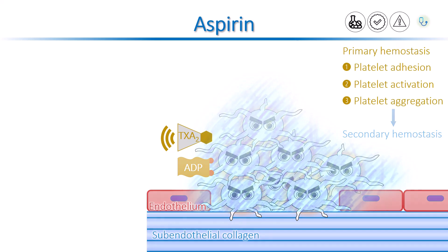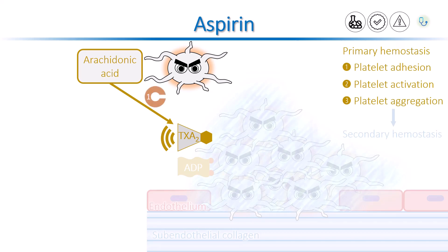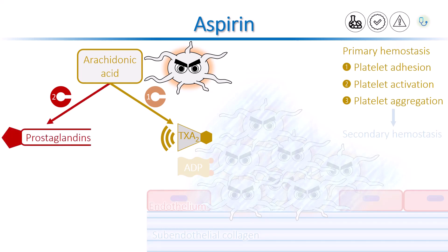We need to know how thromboxane A2 is formed. Activated platelets can make thromboxane A2 from a molecule called arachidonic acid. COX-1 enzyme helps to make thromboxane A2 from arachidonic acid. There is another COX enzyme called COX-2. This enzyme is not related to platelet effects. With the help of COX-2 enzyme, arachidonic acid is converted to prostaglandins, most of which mediate pain and inflammation.